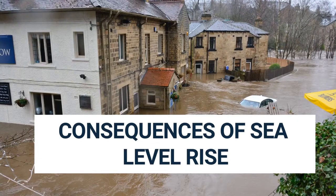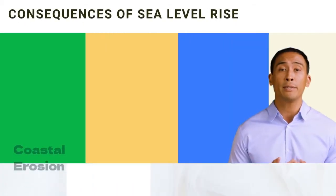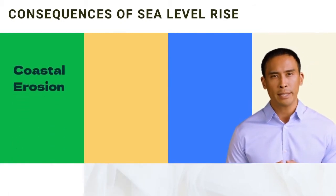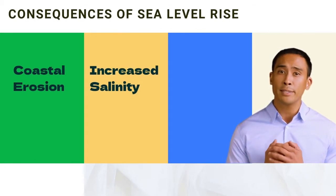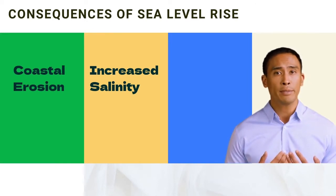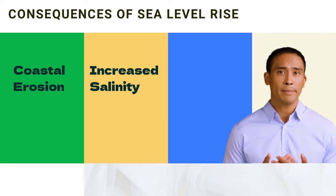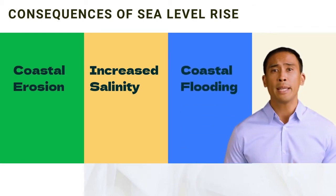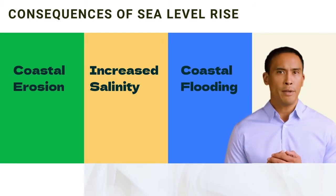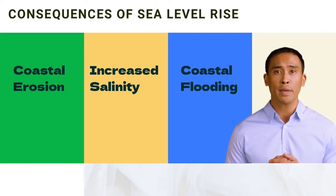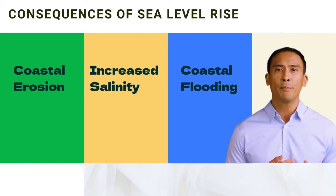Rising sea levels affect humans and the environment, and ocean water can impact terrestrial organisms in countless ways. Coastal erosion is one consequence — the rise in global sea levels increases erosion in coastal regions, and several beaches around the world have been eroded due to sea level rise. Increased salinity is another effect: ocean water contains a lot of salt, and if the ocean expands, salt water can contaminate subterranean aquifers on land. Coastal flooding also occurs regularly when storm surges push the already risen water onto land. The rise in sea levels can cause tidal floods, which can occur even when there is no storm.